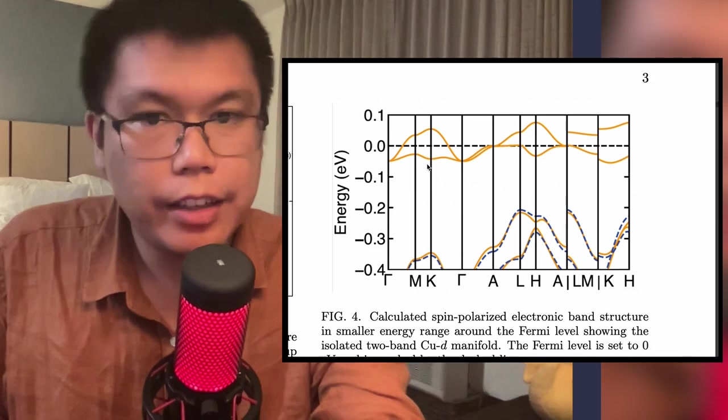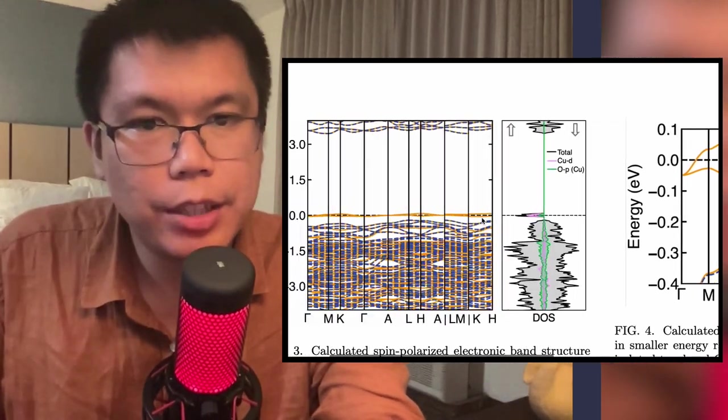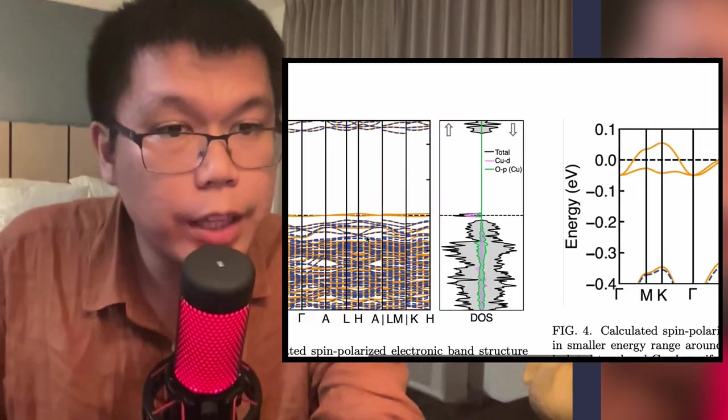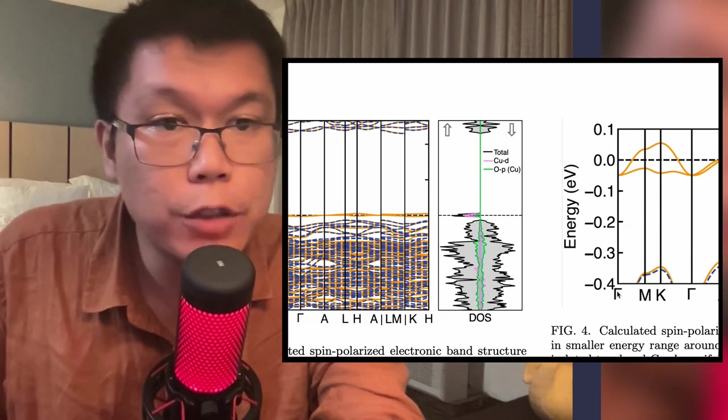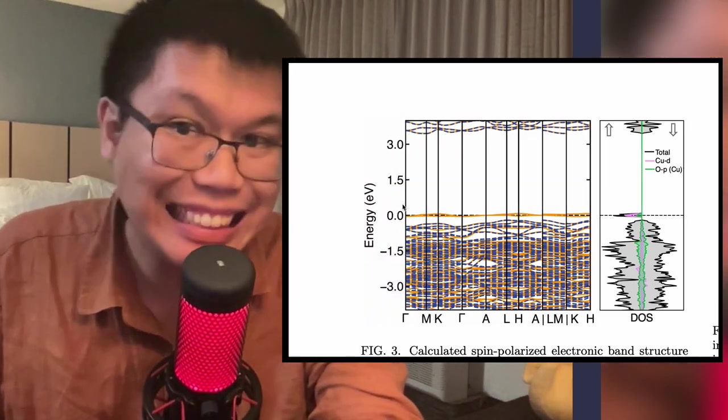To the right, what Sinead does is she just zooms in. So she zooms in around this region from negative 0.4 to 0.1. That's what we have over here.